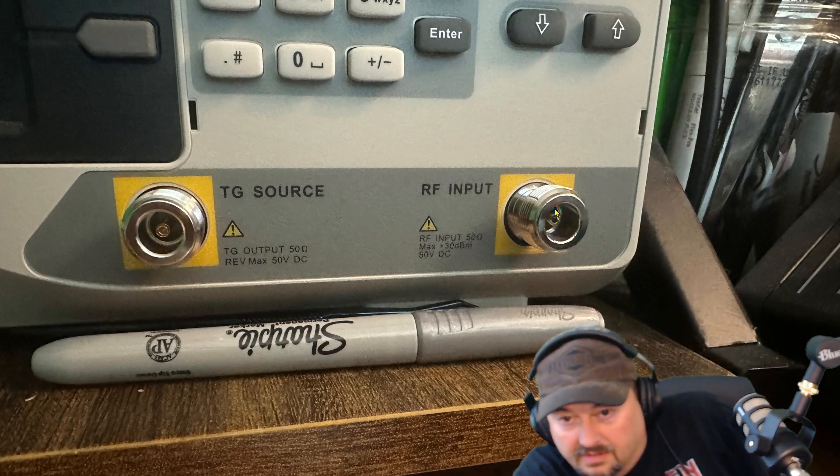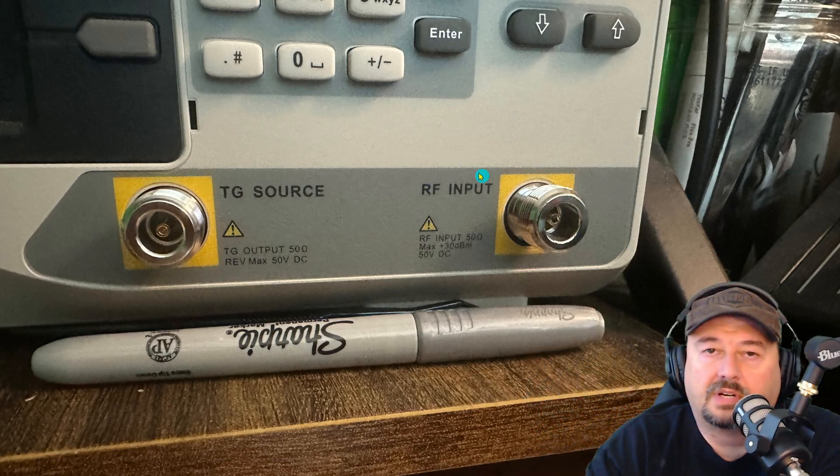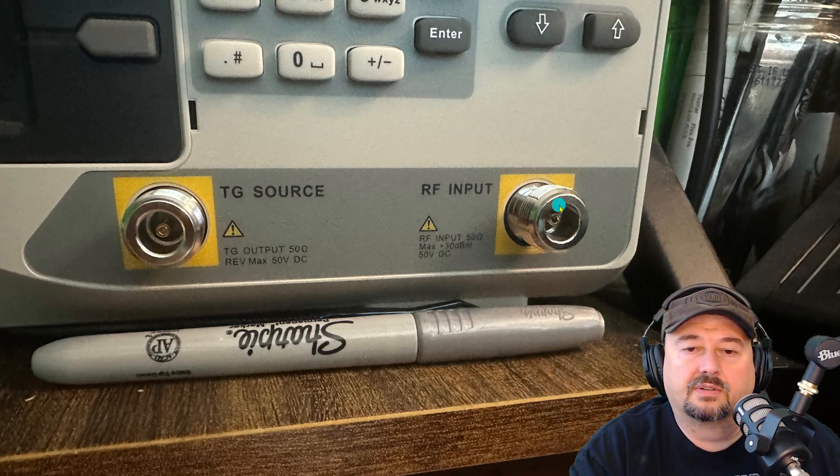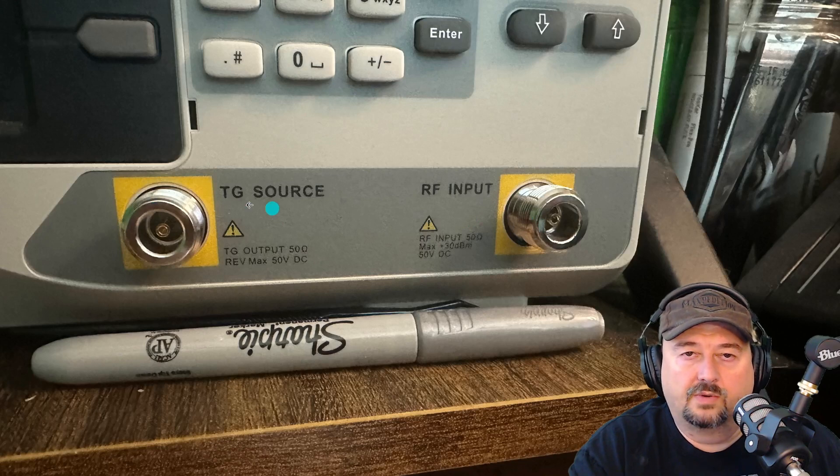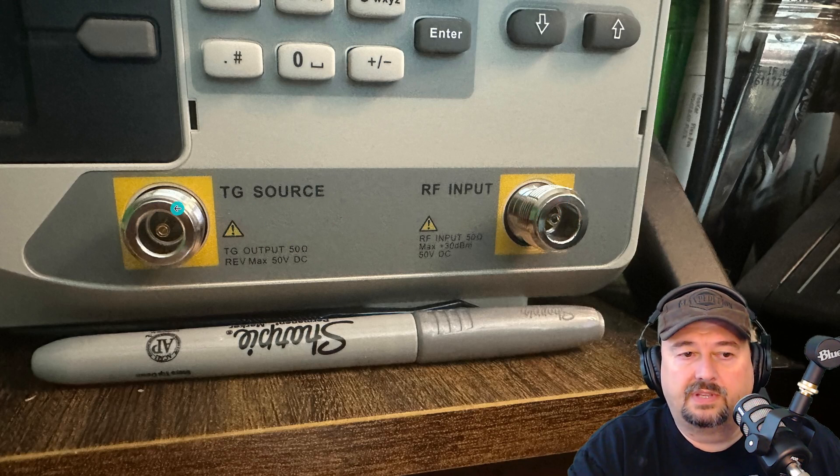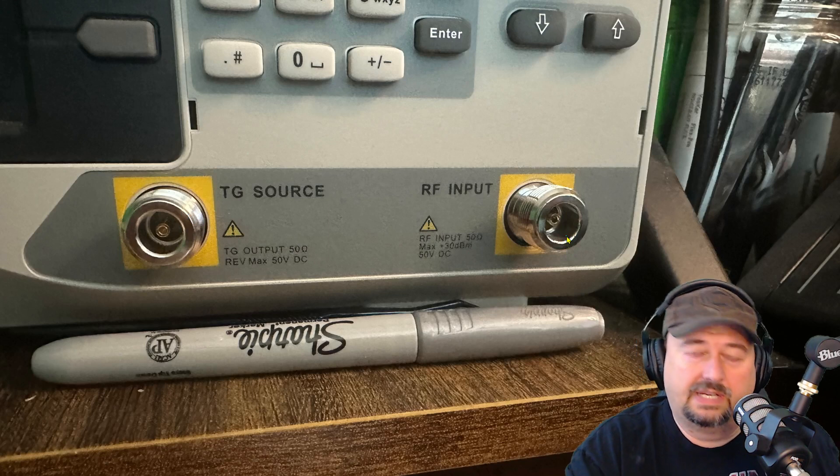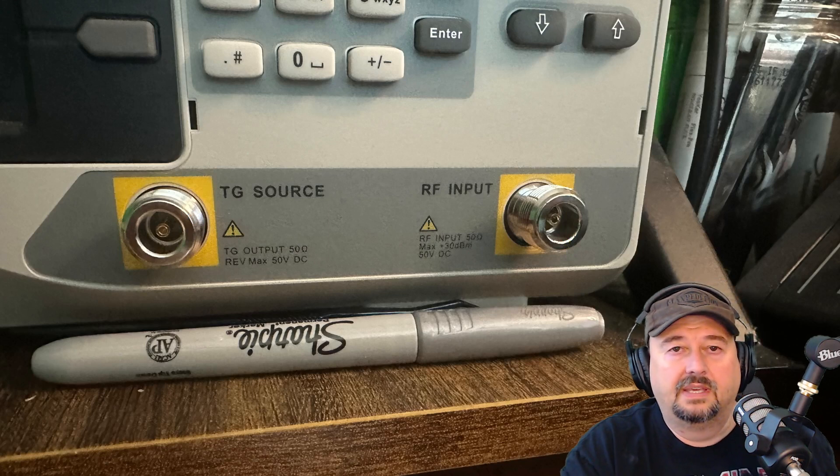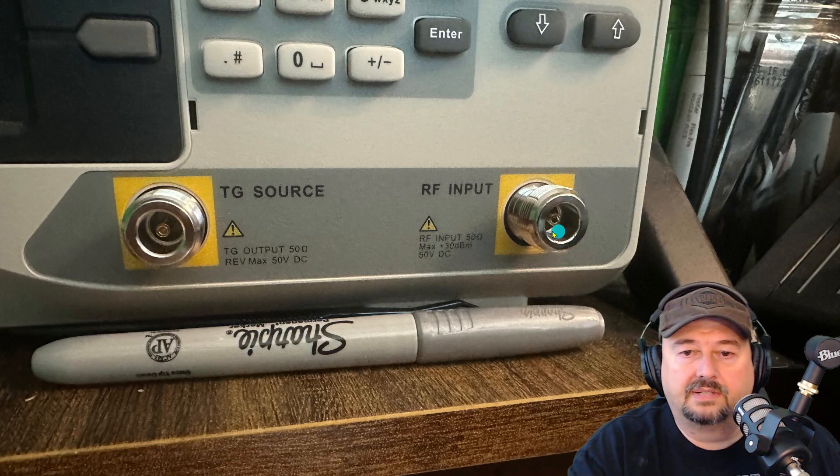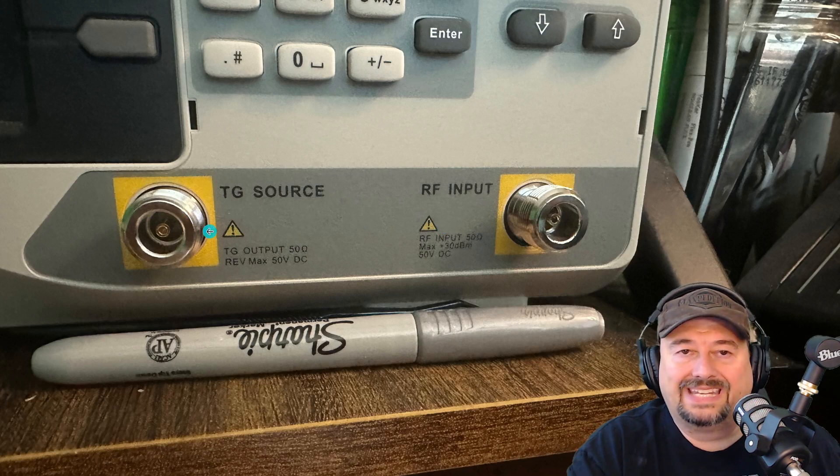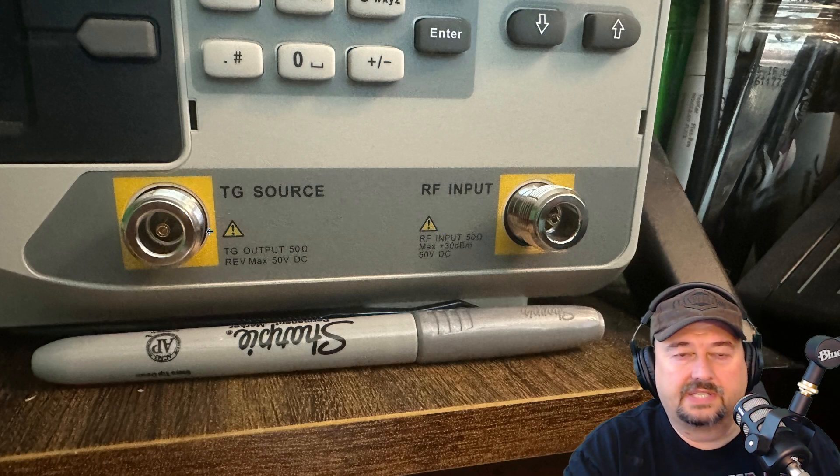This RF input will measure the signal that is going through our coaxial cable transmission line or any devices under test. And it does a comparison between the known signal of the tracking generator source and what it's getting in the RF input. And it plots that on a graph so we can make an analysis and a determination. But these are both N connectors, N female.